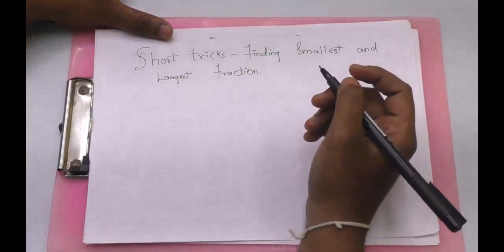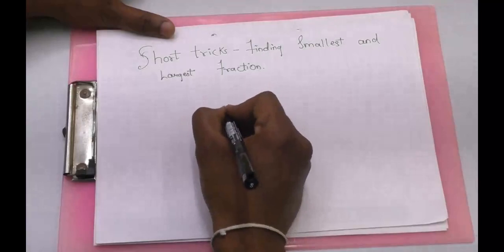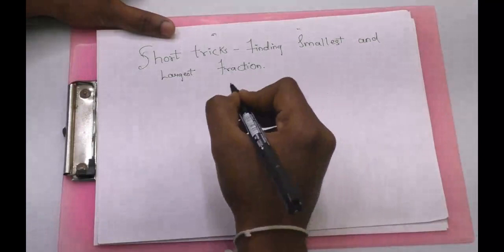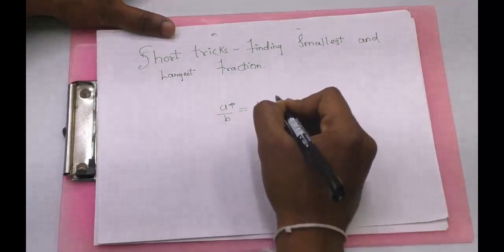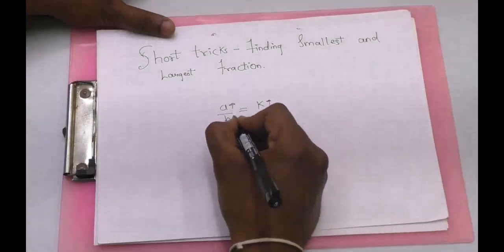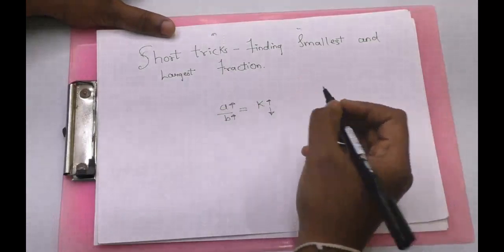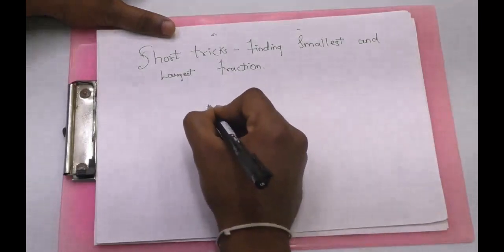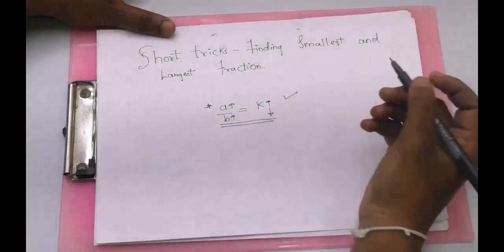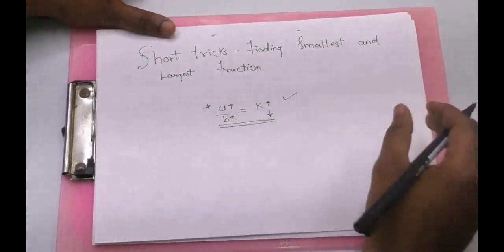To solve this type of question, the basic logic is: when the fraction is A by B and the solution is K, as the value of numerator A increases, the value of K will increase; and as the value of denominator B increases, the value of K will decrease. This simple logic, which we studied in school, will be used in all types of questions we will be solving.